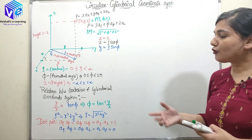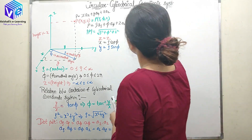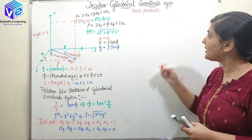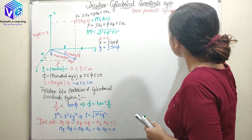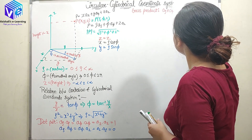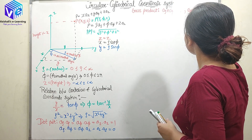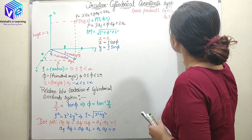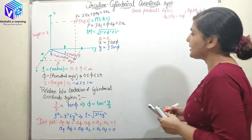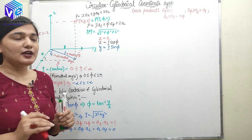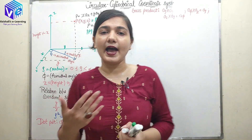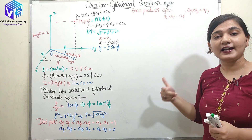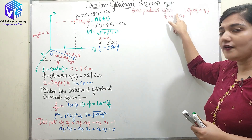Moving to the cross product: a_rho × a_phi = a_z, a_phi × a_z = a_rho, and a_z × a_rho = a_phi. If the order is reversed, you get a negative sign. This is evident from the right-hand thumb rule — placing fingers in the rho and phi directions, the thumb gives the direction of the resultant.